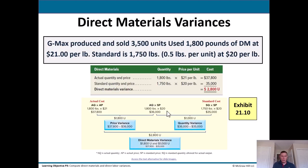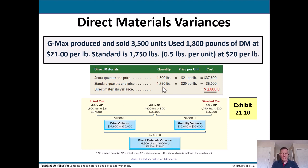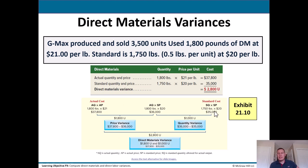Direct materials variances example: G-Max produced and sold 3,500 units. They used 1,800 pounds of direct materials at $21 per pound. The standard is 1,750 pounds — 0.5 pounds per unit — at $20 per pound. Plugging in the numbers: actual quantity and price = 1,800 pounds × $21 = $37,800. Standard quantity and price = 1,750 × $20 = $35,000. The direct materials variance is $2,800 unfavorable — actual cost was $37,800 versus standard of $35,000, so it cost $2,800 more than expected. Breaking it down: 1,800 × $21 = $37,800; 1,800 × $20 = $36,000; 1,750 × $20 = $35,000.